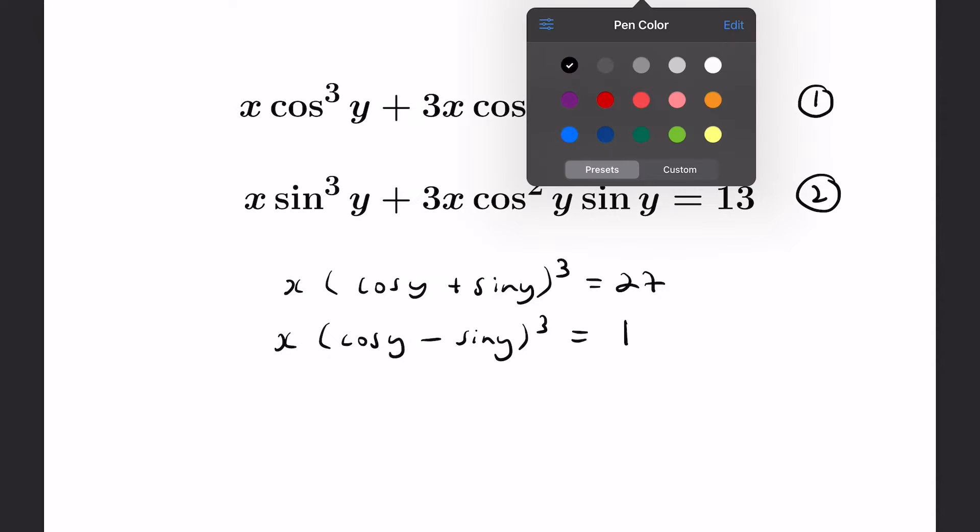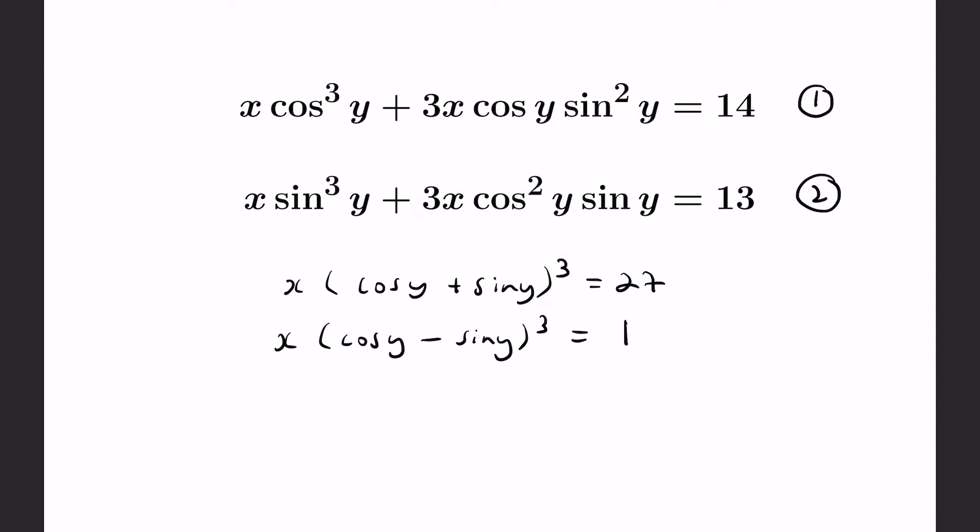If we wanted to do some work on the side, we could think about the quantity a minus b cubed and ask what that is. It'll be a cubed minus 3 a squared b plus 3 a b squared minus b cubed, and you can get that by expanding twice or thinking about something called the binomial theorem.